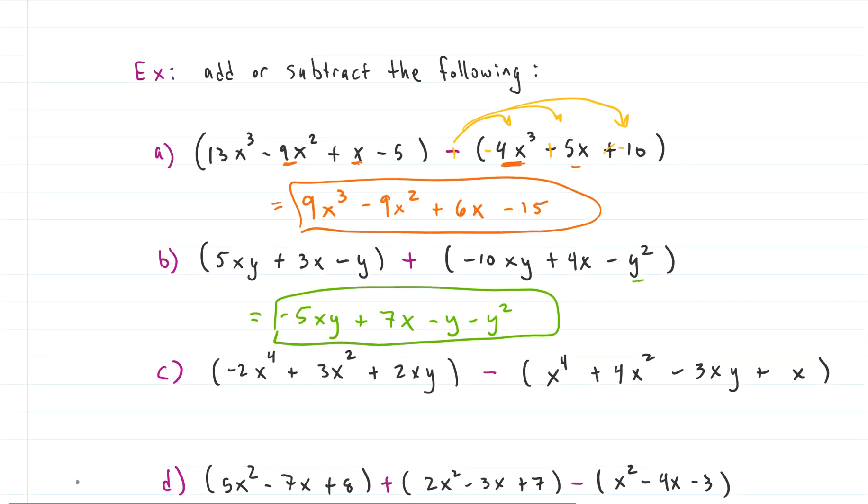Let's do example C. Again, we're subtracting two, so we need to make sure that we are distributing that negative through all of the terms. Let's do it right now. So I'm going to make that a plus, this becomes a negative. So there are four terms in the second one. And we have, originally, we have x to the fourth and positive 4x squared and negative 3xy and x. And we're changing the signs of all of those.